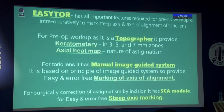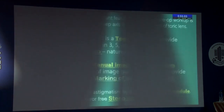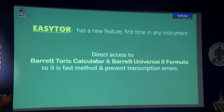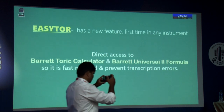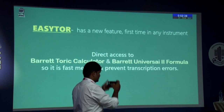Easy Taur has all important features required for preoperative workup and intraoperatively to mark the steep axis and axis of alignment of the toric lens. For preoperative workup, we want topography, keratometer reading in 3, 5, and 7 mm zones, and axial heatmap; the nature of astigmatism should be regular. For the toric lens, it has a manual image guided system based on the principle of image guided system, providing easy and error free marking of axis of alignment. For surgical correction of astigmatism by incision, it has an SCA module for easy and error free steep axis marking. It also has direct access to the Barrett toric calculator and Barrett Universal 2 formula, which is very fast and prevents transcription error. By one click of a button, you can get directly the net astigmatism and axis of alignment from the Barrett toric calculator.